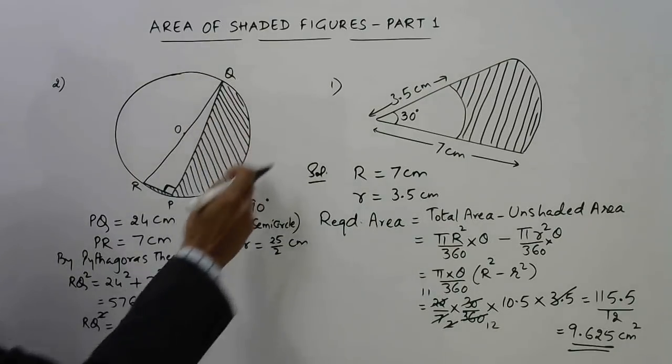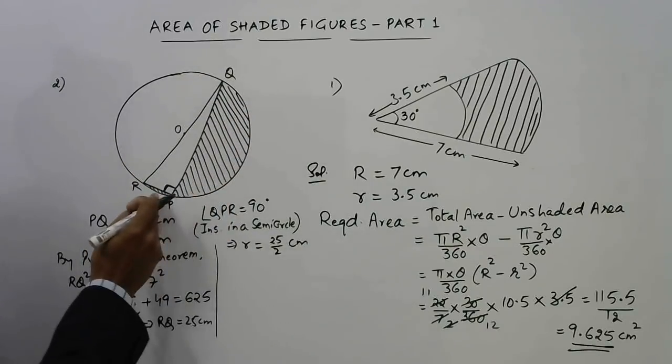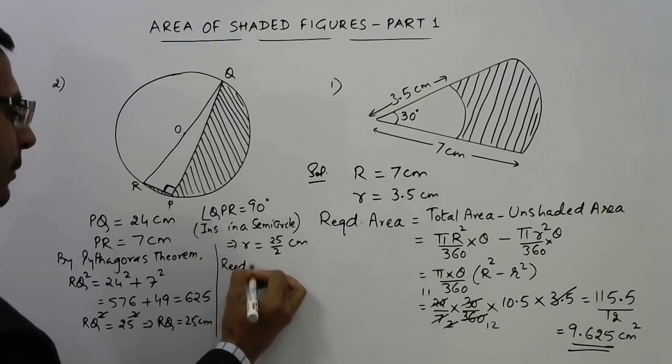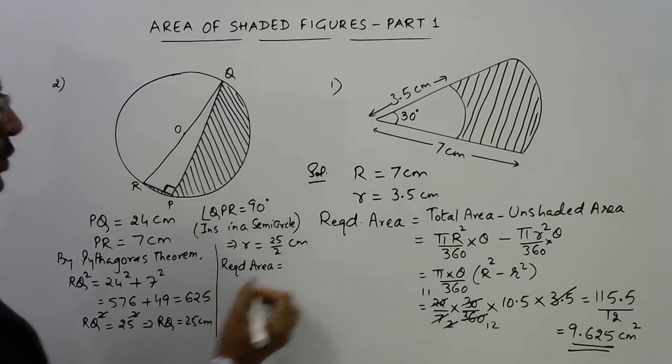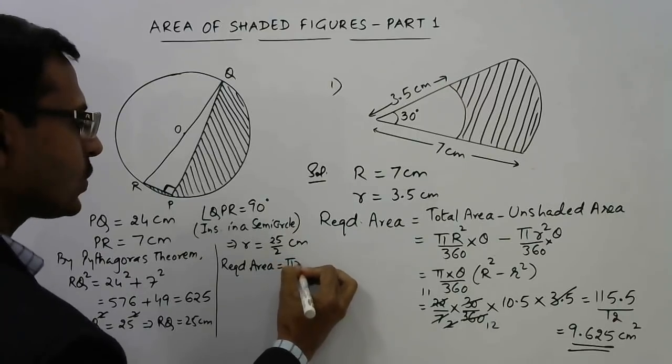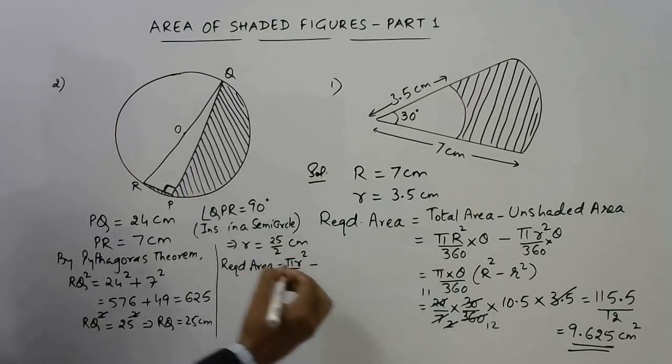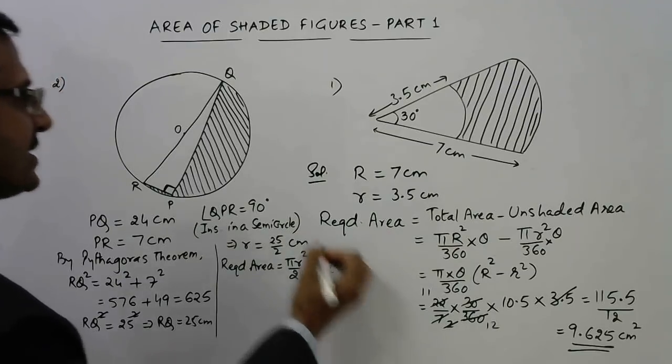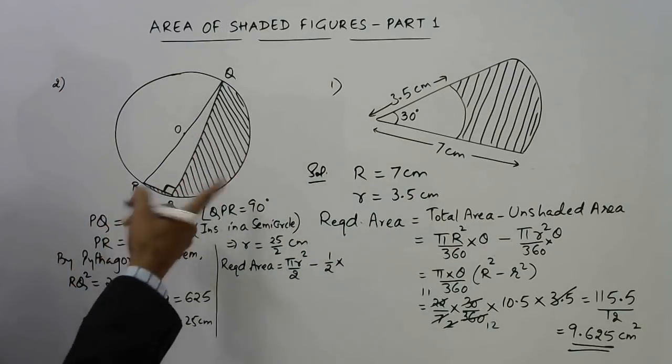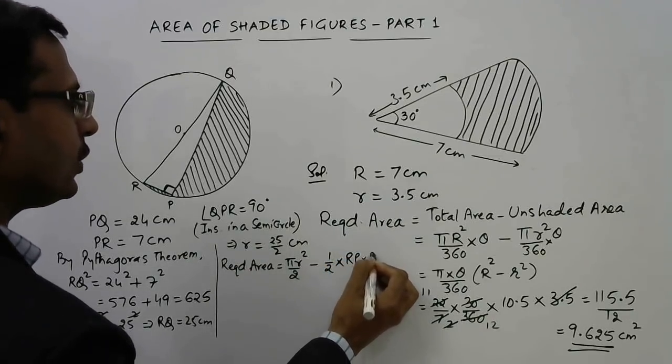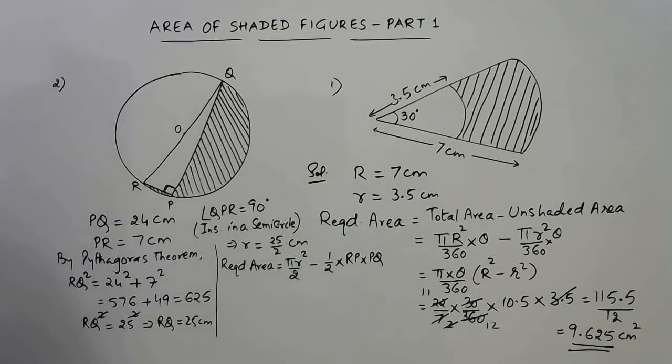Now all we need to do is take the area of the semicircle and subtract the area of the triangle from this. Our required area will be equal to area of semicircle, that is πr²/2, and we need to subtract the area of the triangle, so 1/2 × base × height. We can take base as PR and height as QP. Everything is known to us.